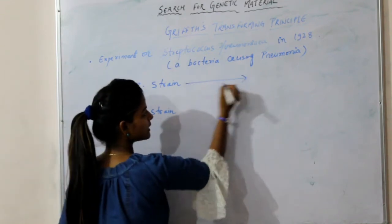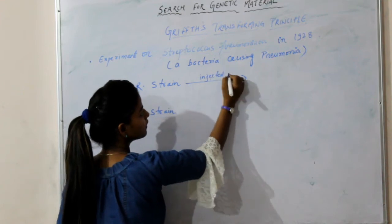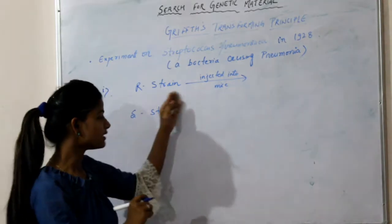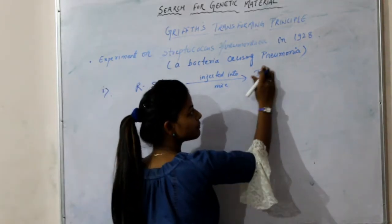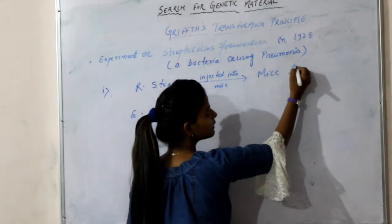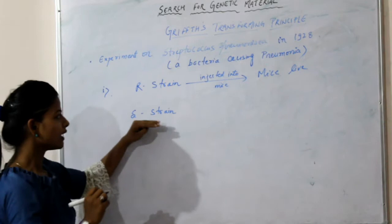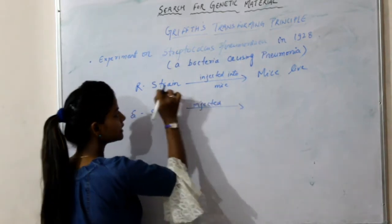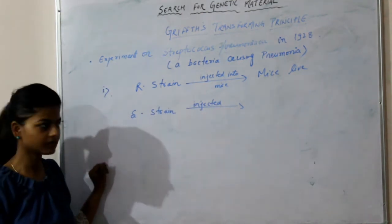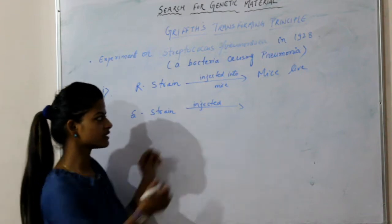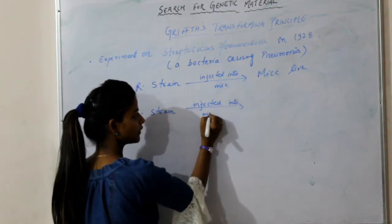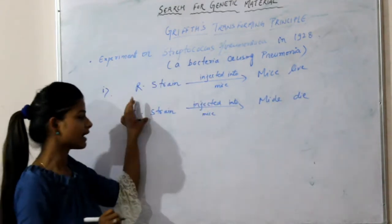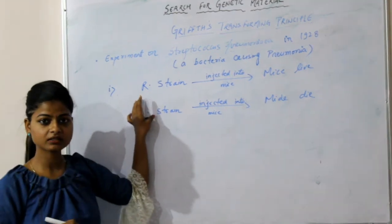When R-strain is injected into mice, the mice do not die. But when S-strain is injected into mice, the mice die and develop pneumonia. The R-strain and S-strain are colonies of Streptococcus pneumoniae bacteria. S-strain bacteria is virulent.